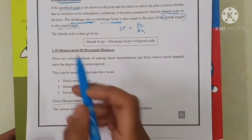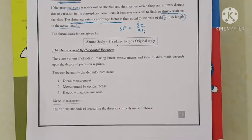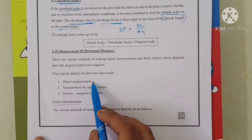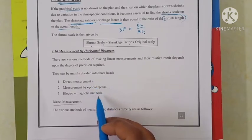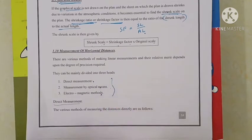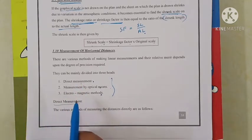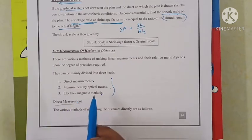Next we will see measurement of horizontal distance. While doing the survey we will take a horizontal distance. There are various methods of measuring linear measurement and each method has its own merits and demerits. Depending on the degree of precision they are classified into three heads: direct measurement, measurement by optical means, and electromagnetic measurement.